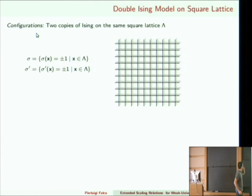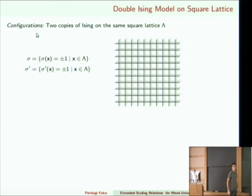What do I mean by the double Ising model? Basically I have two copies of the Ising model, so the configuration is given by two configurations of the Ising model. You have a variable called spin: sigma at point x can be plus or minus one. You are on a lattice — actually on a finite sub-lattice called lambda — and you have two configurations of spins, meaning you assign a plus or minus one to each of the lattice sites.